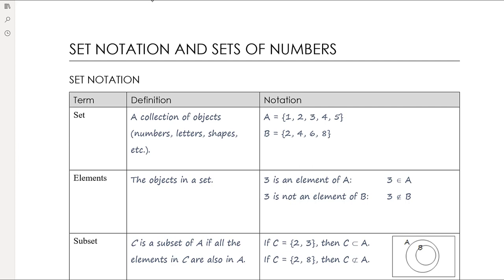A set is just a collection of objects — those objects might be numbers, letters, shapes, etc. We're mostly going to be dealing with sets of numbers, so we're interested in a list or a span of numbers. When we define or describe a set, we need to use curly brackets.